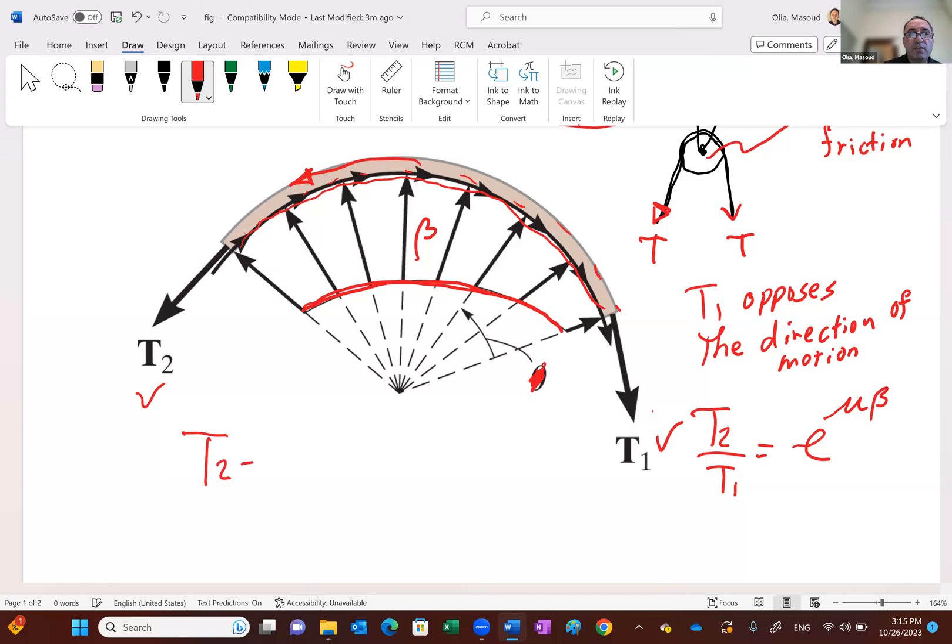So T2 then, say if you have T1, for example, the relation is T2 is T1 times e to the power mu times beta. Mu is the coefficient of friction, and beta is the angle of contact.